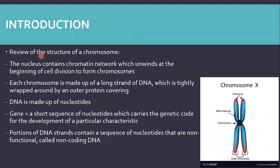The introduction: a review of the structure of a chromosome. Chromosomes are formed when the chromatin network unwinds at the beginning of cell division, and each chromosome is made up of a long strand of DNA, which is tightly wrapped around by an outer protein covering. You can see this DNA molecule here in the chromosome, tightly wrapped around by an outer protein covering. DNA is made up of nucleotides.